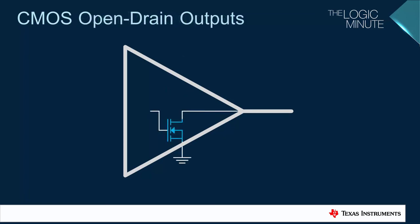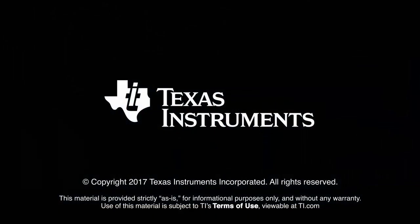An open drain output is basically just a push-pull output with the p-channel MOSFET removed or disabled. Because of this, the output can only be driven low or put into a high impedance state. The underlined diamond symbol is used to denote an open drain output. Please click on the links below to jump to the video of interest, and thank you for watching.